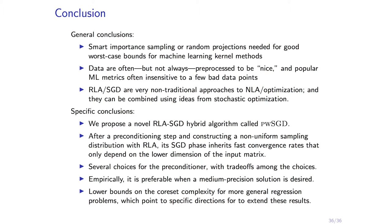Conclusions: smart importance sampling probabilities or random projections are needed for worst-case bounds on a bunch of matrix problems. Data are often processed to be nice, and many machine learning metrics — classification and so on — are fine if you mess up a few examples, which is a fairly strong assumption about data or objectives. SGD and RLA are very different from traditional deterministic numerical linear algebra and optimization, but they can be combined using ideas from stochastic optimization. In a certain parameter regime, this combination does better than either competing approach individually. You can be linear, super-linear the old way, sublinear with assumptions, or sublinear after a batch phase treating that as an offline cost.